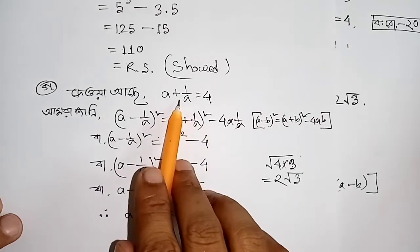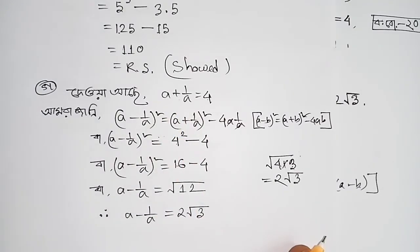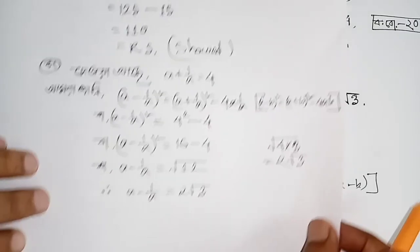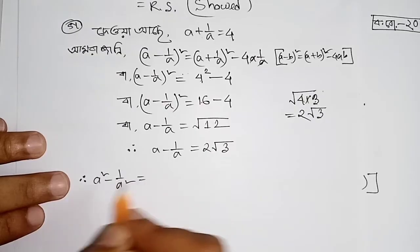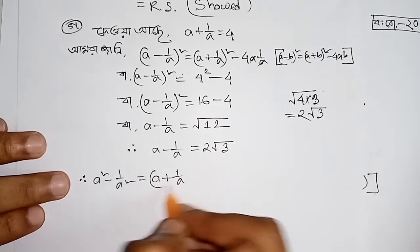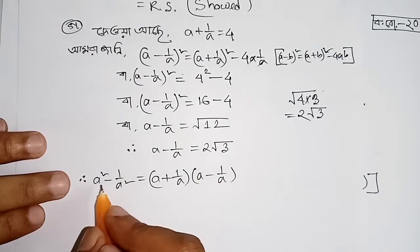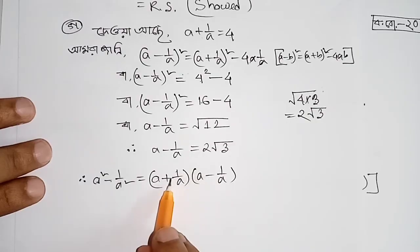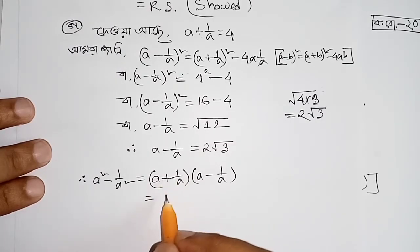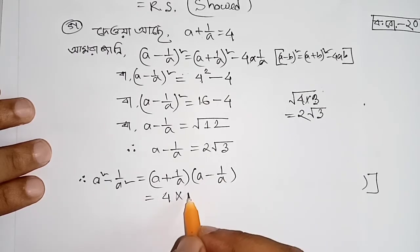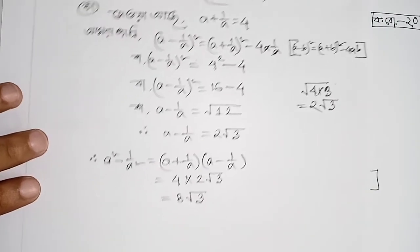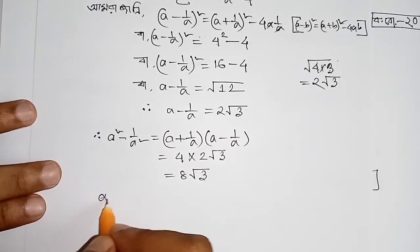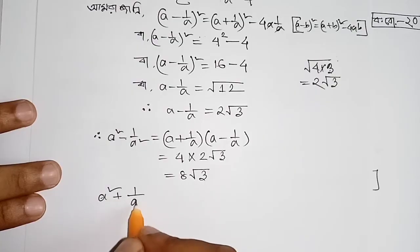So a minus 1 by a is 2√3. Let's take a look: 1 minus 1 is 2√3. The calculation gives us values of 2√3 and 3√3. So a squared plus 1 by a squared equals 2√3.